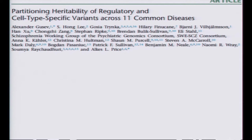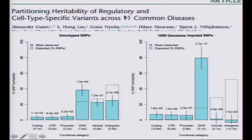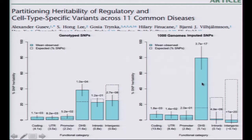Our colleagues at Harvard and the Broad did us one better. With Alkes Price's group's paper at the end of 2014, they combined 11 common diseases together and used ENCODE annotations to show that about 40% of heritability can be concentrated into variants that lie in DNase-1 hypersensitivity sites. But if you use the imputed data, it's closer to 80% of the common variant heritability concentrated in SNPs that map to DNase-1 hypersensitivity sites — which is remarkable. This does vary by disease, as this is a concatenation heavily representing autoimmune disorders.